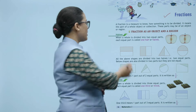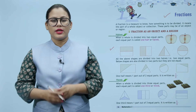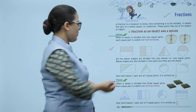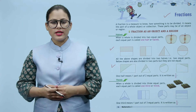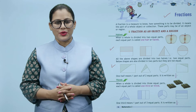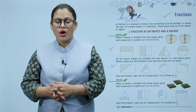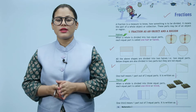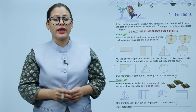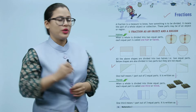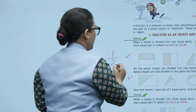As you look at the figure, they are all equally divided into two parts. These shapes are also divided into two parts, but not equally divided. One half means one part out of two equal parts; it is written as one by two. One half ka matlab hota hai ek part out of two equal parts, aur isse ham likhte hain one by two.